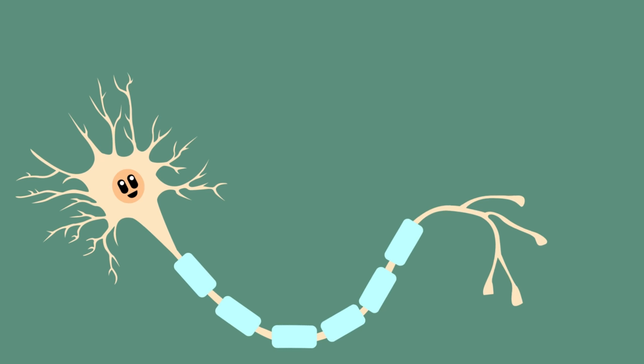Neurons have three different kinds of potentials: resting, graded, and the action potential.